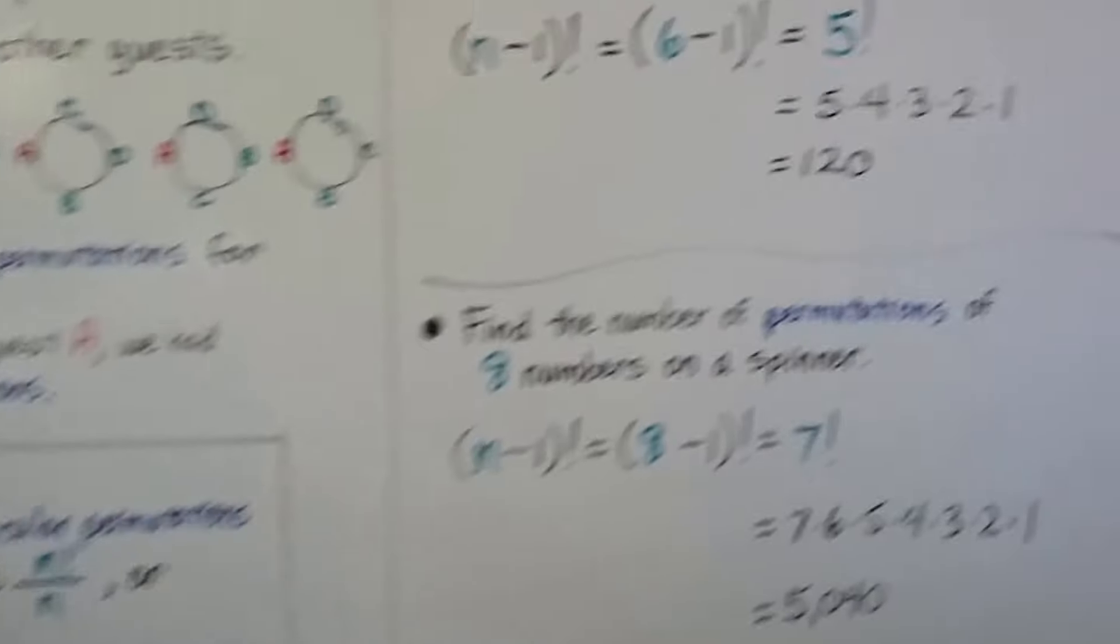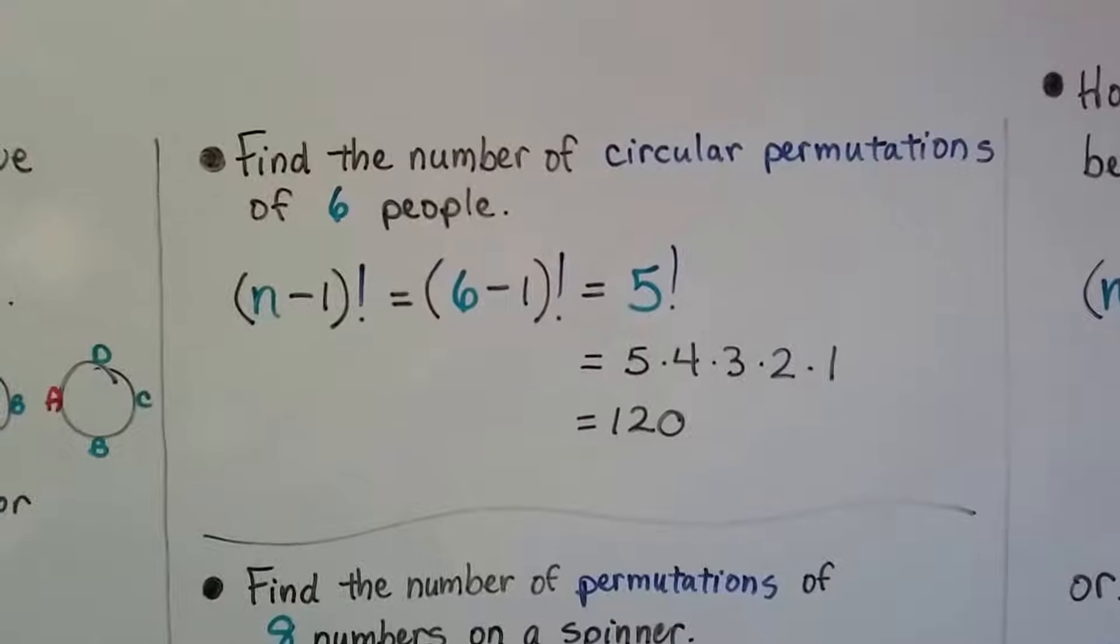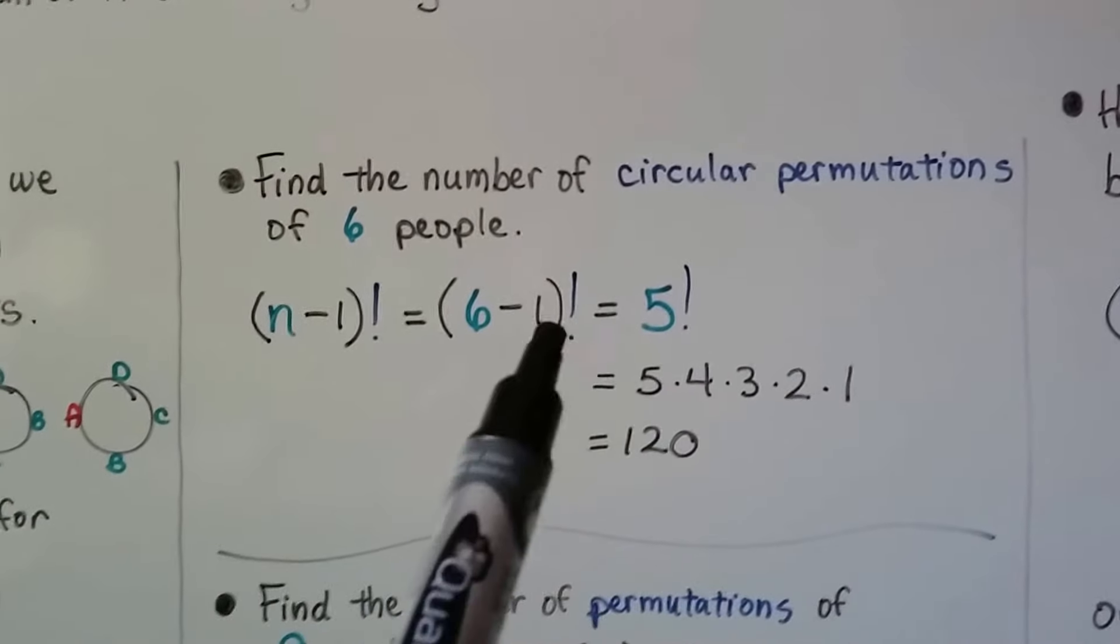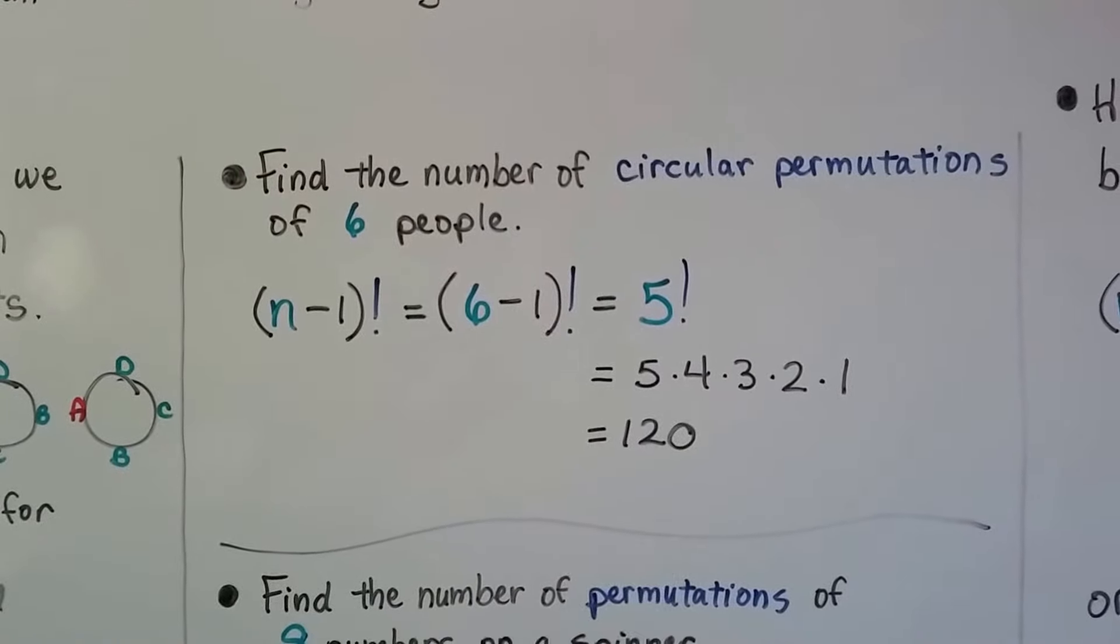We can find the number of circular permutations of 6 people. (6-1) factorial is 5 factorial, which gives us 120.